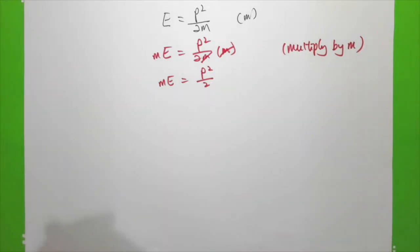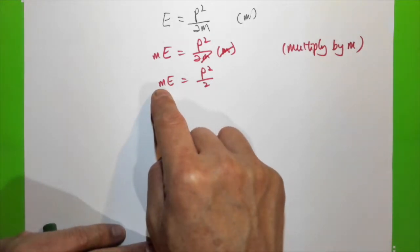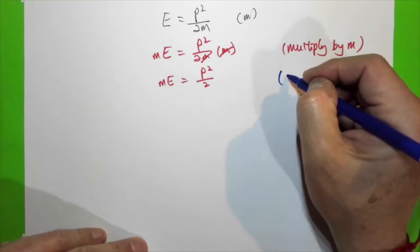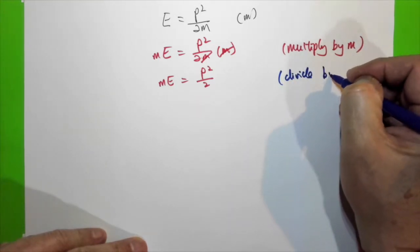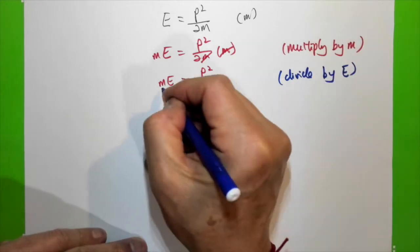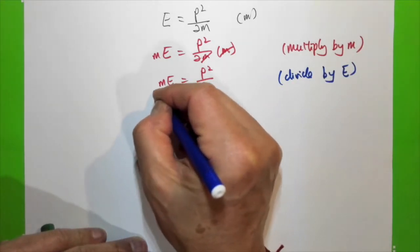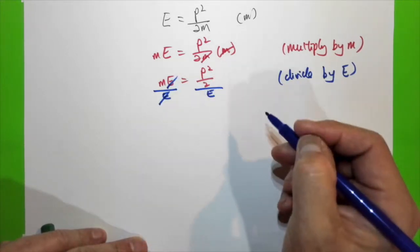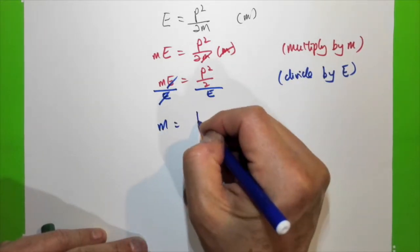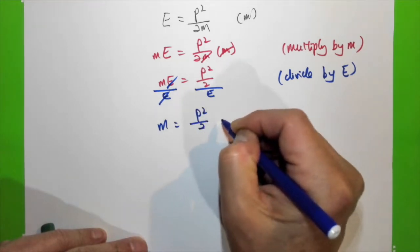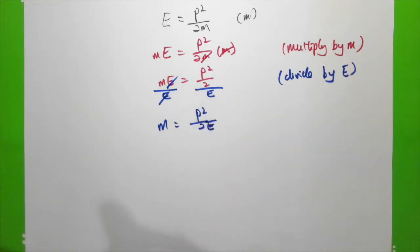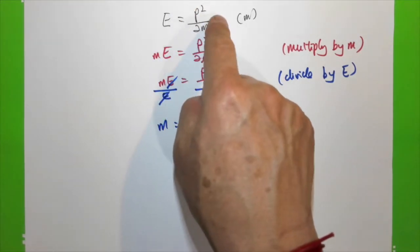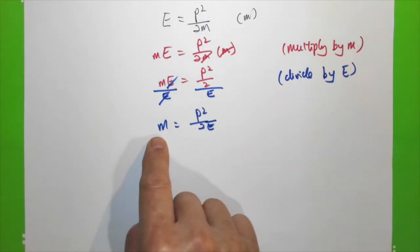Next I want to eliminate E so that m becomes the subject. I divide both sides by E — dividing by E eliminates it, and therefore m equals p² over 2E. This is how I rearrange E = p²/2m to make m the subject.